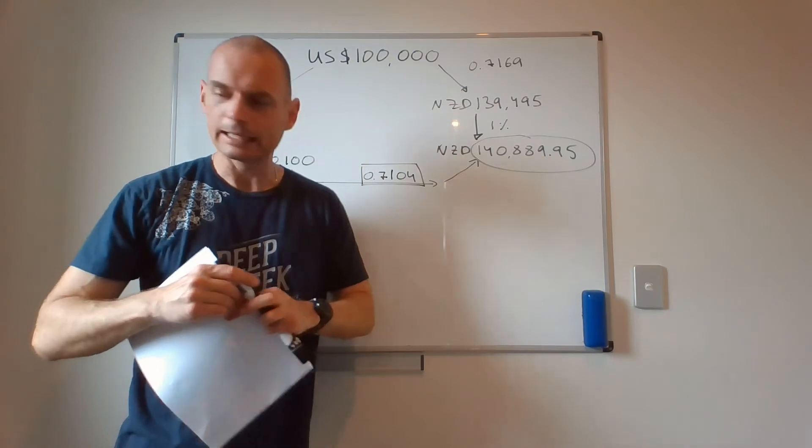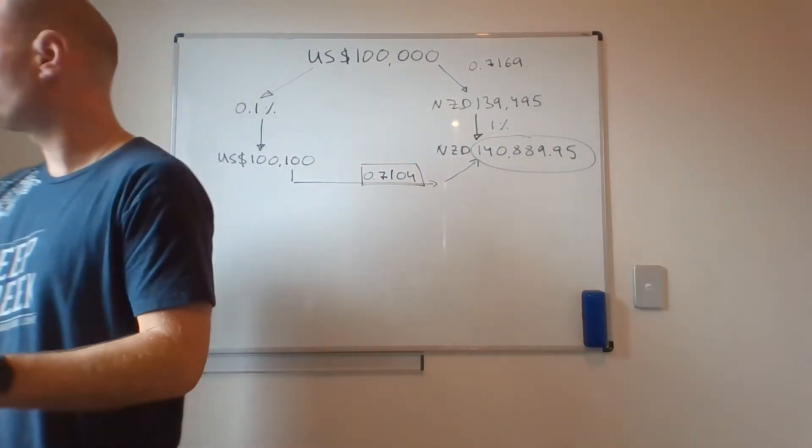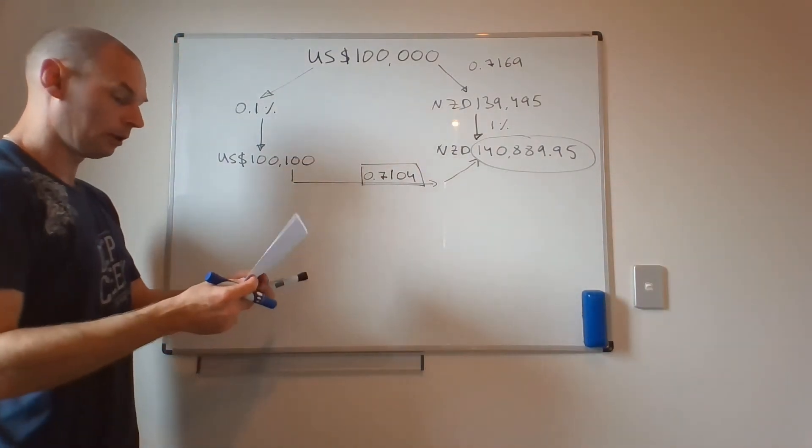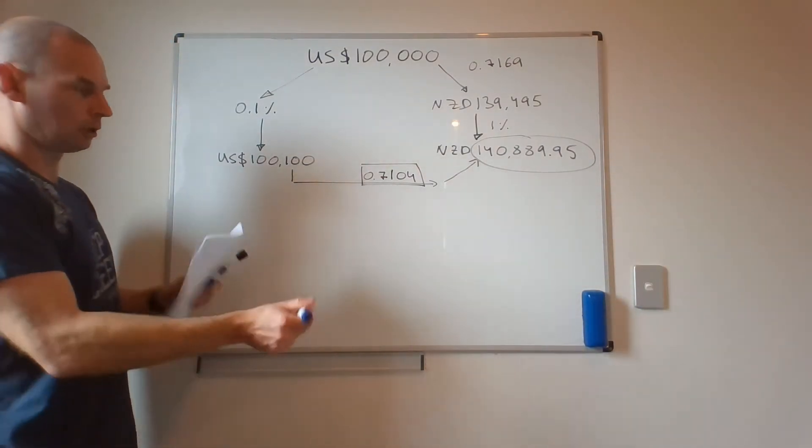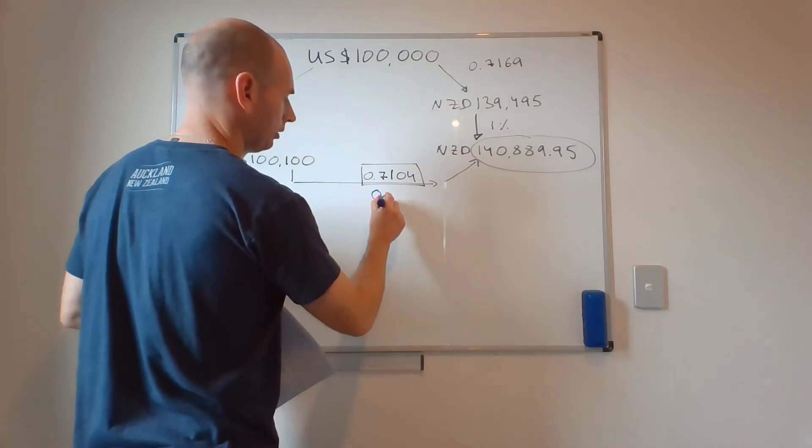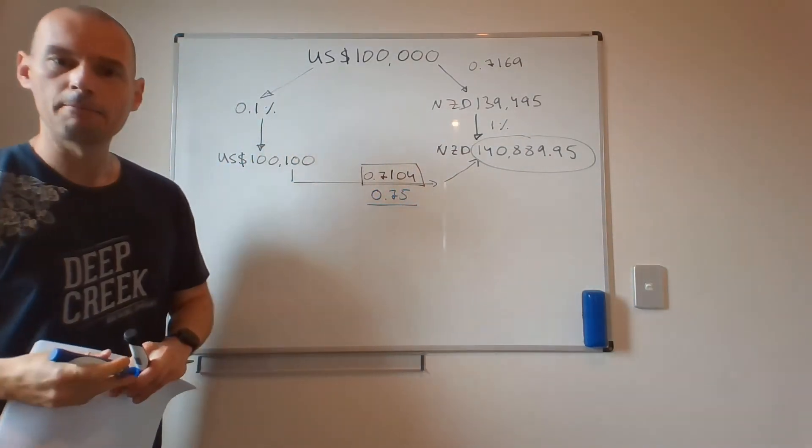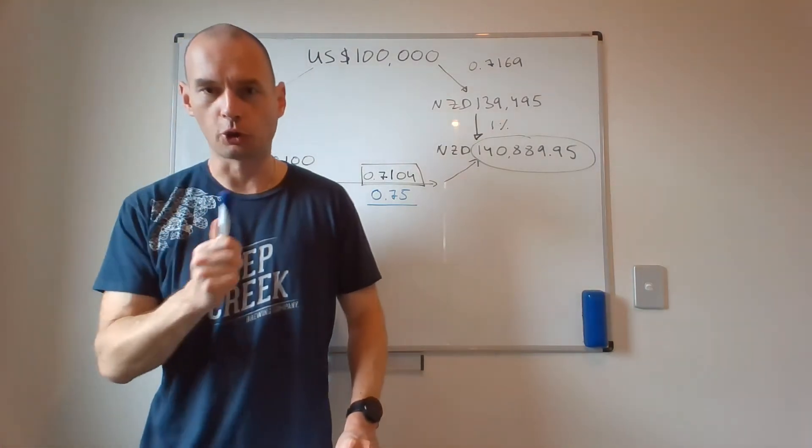So let's say for a second that the exchange rate a year from now is not 0.7104. And I will use quite a large deviation. So let's say it's 0.75. So interest rate parity actually does not hold.